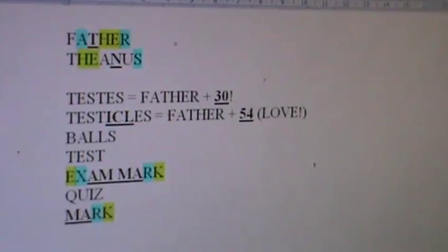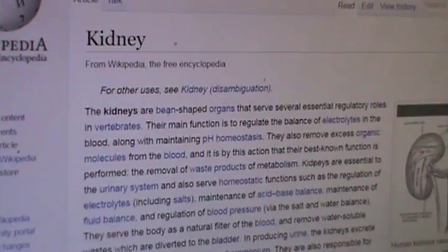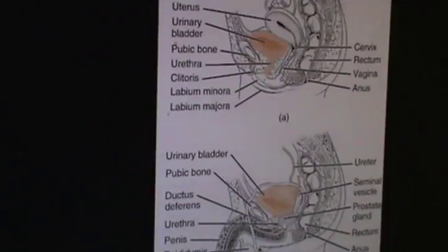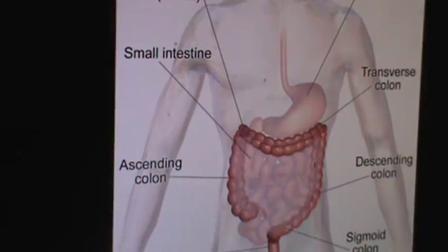So testes and testicles and colloquially people sometimes say balls. And that also is an offset of six from father, father minus 12. So all these are offsets of sixes from father for the glory of the trinity. Testes, testicles, balls, and all that stuff. So we did a good job on all this. Lips and teeth. It's just all so perfect.